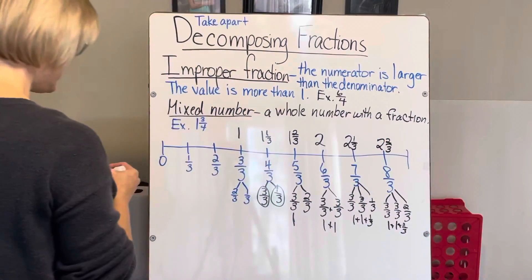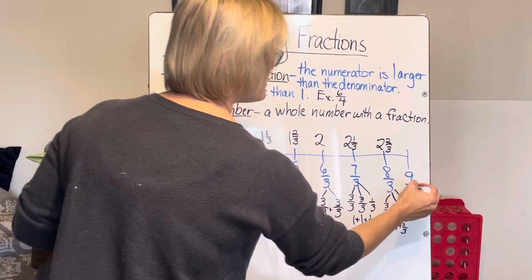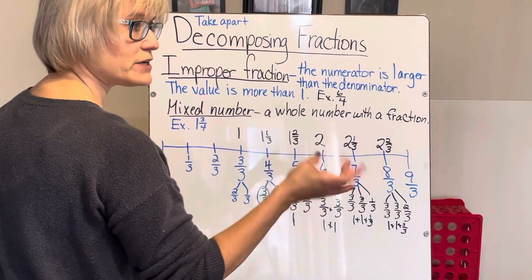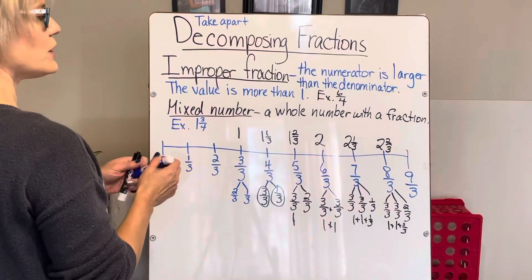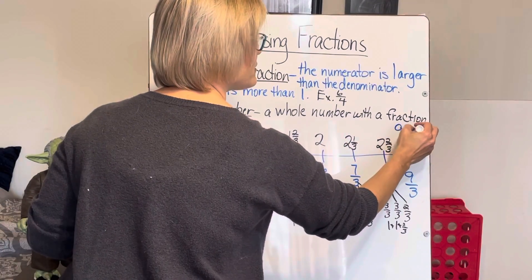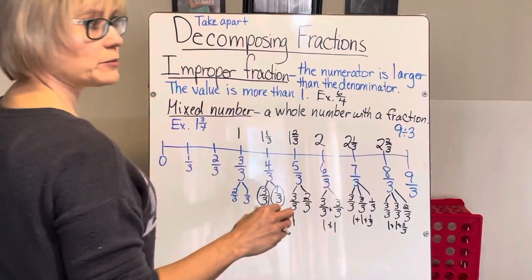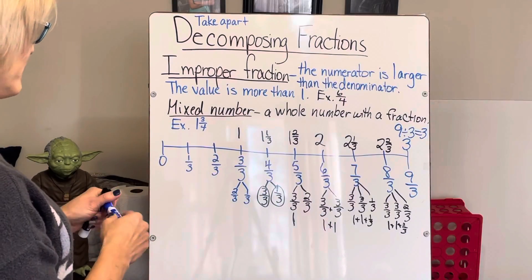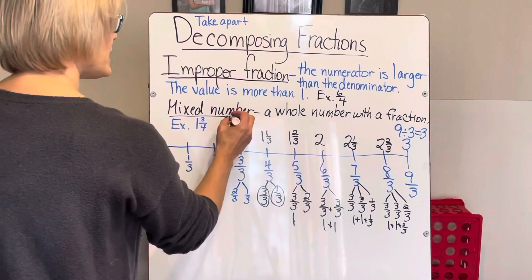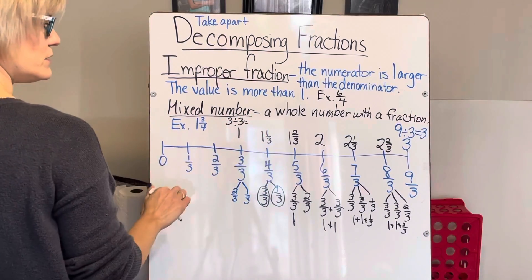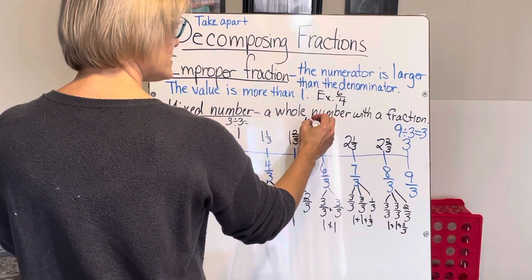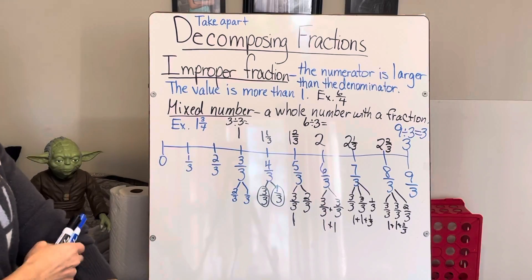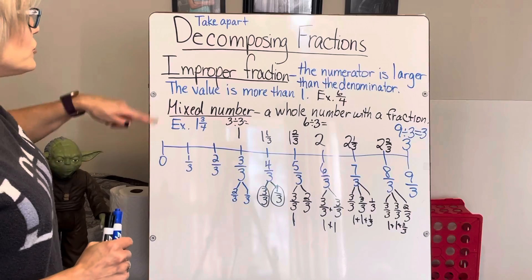Now nine-thirds. I know that counting by threes — three, six, nine — I can count by threes three times to get nine. If I try the division: nine divided by three equals three, so there are three wholes in nine-thirds. Going back: three divided by three equals one, six divided by three equals two, nine divided by three equals three. That's the connection between fractions and division.